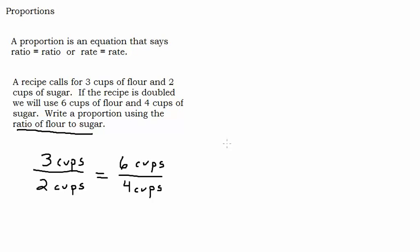A ratio compares something with the same unit — here we're using cups and cups. In a minute we'll look at a rate where the labels might be different, like miles per hour. Technically you could cancel the similar units and say three is to two as six is to four. To verify that two sides are equal, you could reduce the fraction: six-fourths reduces to three-halves, so three-halves equals three-halves.